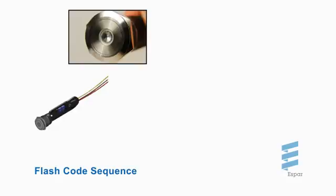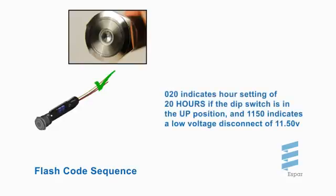Immediately after applying power to the switch, a sequence of flashes will appear, revealing the digits for the presets for the low voltage setting and the heater run timer.